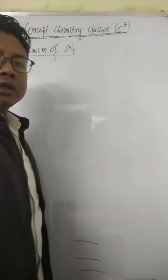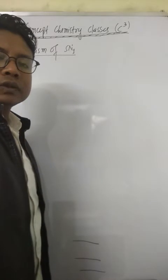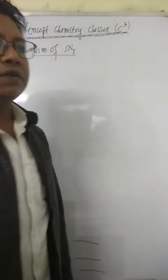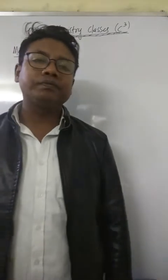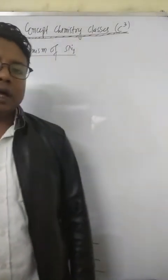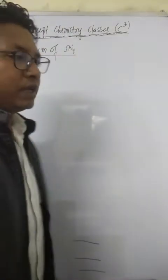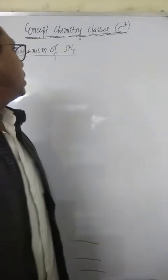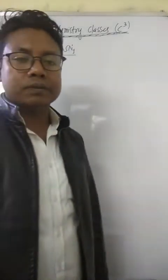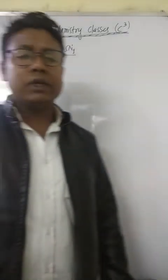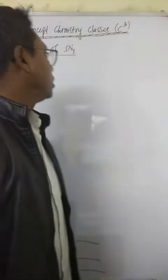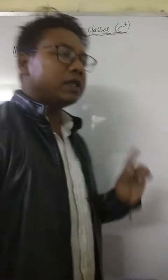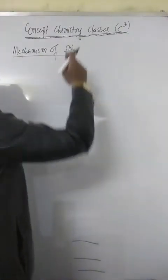Hello guys. In the last video I explained the differences between SN1 and SN2 reactions. Now in this video, I'm going to explain the mechanism of SN1 reaction. SN1 reaction takes place in two steps, and the stability of carbocation decides whether the reaction will take place as SN1 or SN2. So we need to take a stable carbocation.